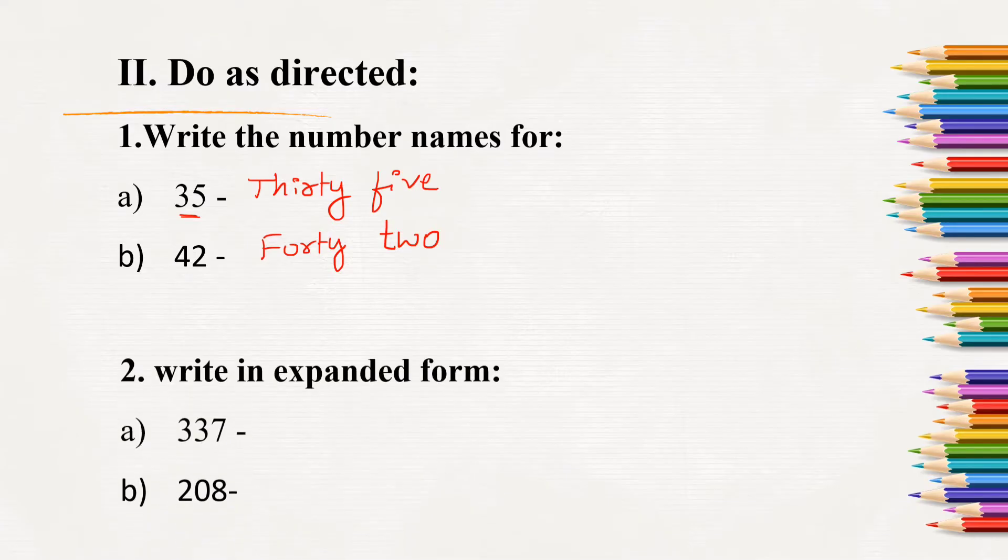Next, write in expanded form. We have to expand and write the given numbers. 337 is the number. The value of 3 here is 100, the value of 3 here is 10s and 7 ones. So 300 plus 30 plus 7. Next, 208. 200, 0 tens and 8 ones. 200 plus 0 plus 8.